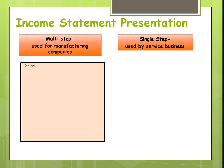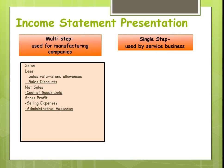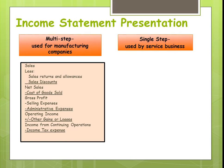For the Multi-Step format, we would list our sales, adjust for any returns, allowances, and discounts to get net sales. Then we would take out Cost of Goods Sold to get gross profit, then reduce it by selling and administrative expenses to get operating income, plus any gains or minus any losses, to get income from continuing operations. Then we would have income taxes, and then net income.